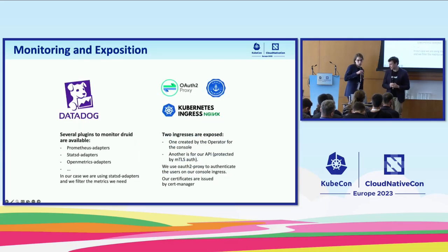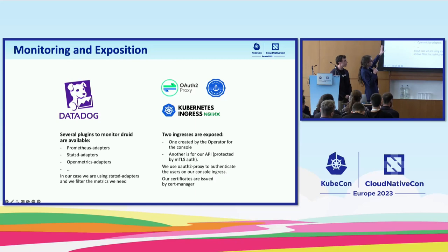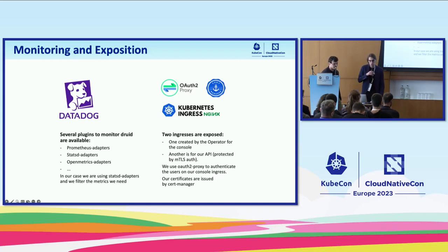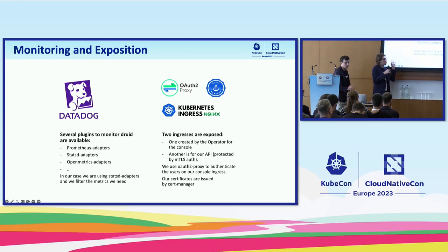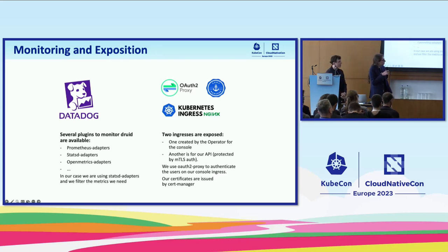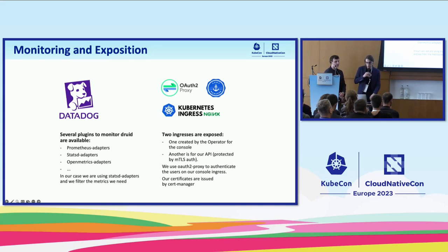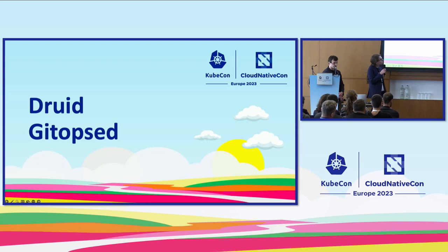For monitoring, we use Datadog, though there are many plugins available: open metrics, Prometheus, and StatsD plugins are all available. We deploy two ingresses — one for the console and one for the API, protected with mTLS. We use cert-manager to handle all certificates. We also use Datadog APM to monitor traces on our Go API.